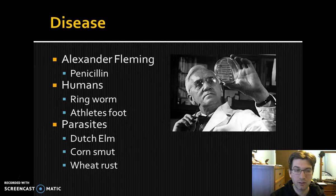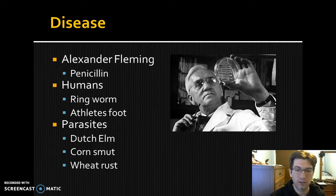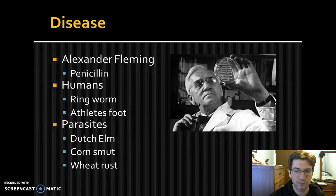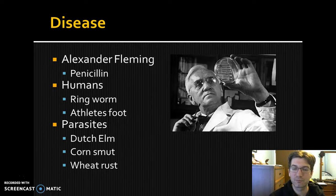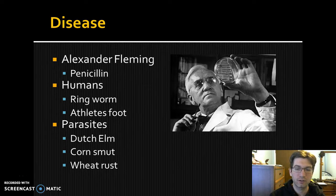Fungi can also be parasitic. For example, Dutch elm disease is common in our area — the Park Service quarantines sections of forest because it can spread easily by a hiker dragging a stick from one area to another, infecting elm trees. Corn smut is a fungal infection that affects corn crops, which can be detrimental. And wheat rust also affects crops. Not all of these affect humans directly, but they do affect us indirectly by destroying our crops.